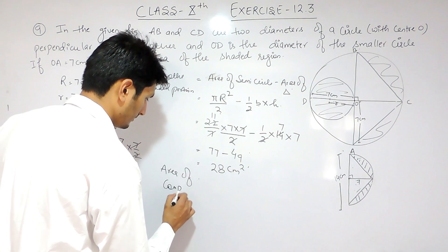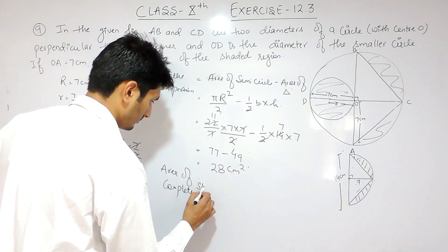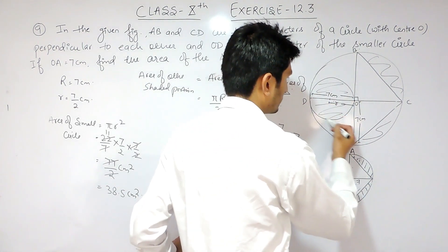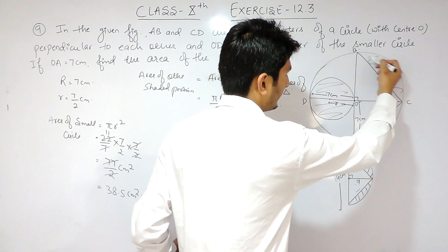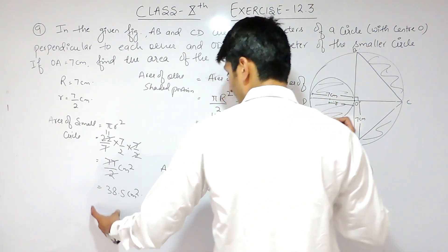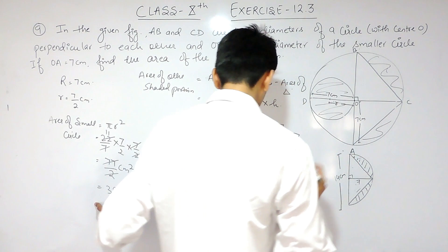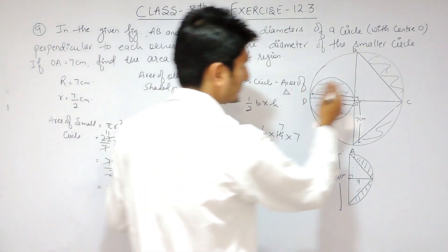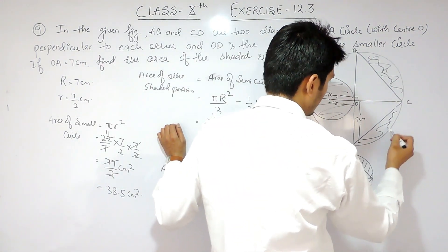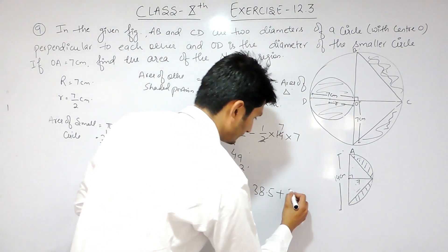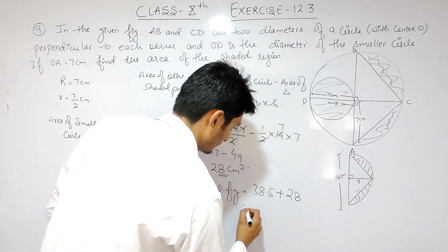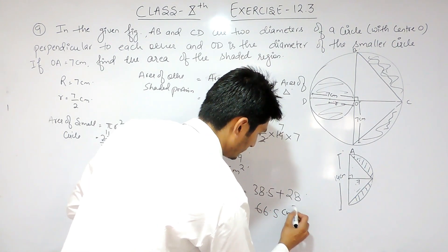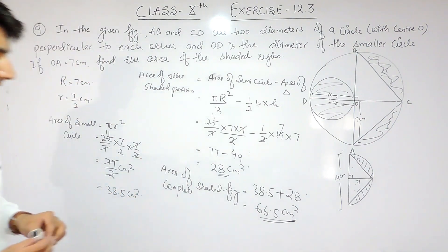The total area of the complete shaded figure equals the area of the smaller circle plus the area of the other shaded portion, which is 38.5 + 28 = 66.5 cm². So the answer is 66.5 cm².